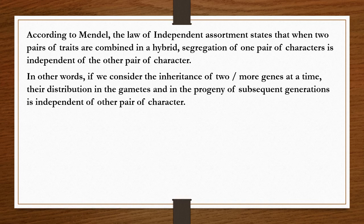According to the law of independent assortment proposed by Mendel, when two pairs of traits are combined in a hybrid, in this dihybrid cross two pairs of traits are combined. The two traits considered are capital Y capital Y and capital R capital R — yellow and round — crossed with small y small y and small r small r. This forms gametes capital Y capital R, and the other gamete is small y small r.